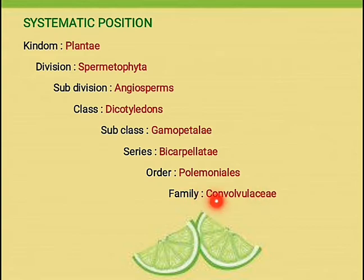Most of the plants of this family are herbs, shrubs, and climbers. Corolla is campanulate, stamens alternate with petals, that means alternate petalous. Fruits are capsule or nut type.